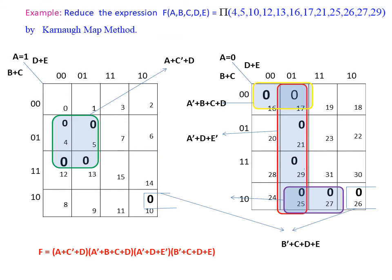In this example, this is a Product of Sums (POS) expression. So first we represent the maxterms as 0 in the K-map, then check the common groupings. Here only one cell grouping is available; the remaining cells are not having common groupings. For this grouping, A is eliminated, so the expression is B-bar + C + D + E. For the red color grouping: A-bar + D + E-bar. For the first green color grouping: A-bar + B + C + D. For the second green color grouping: A + C-bar + D.